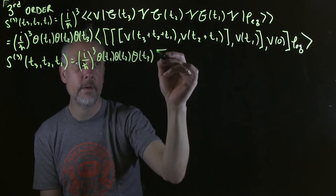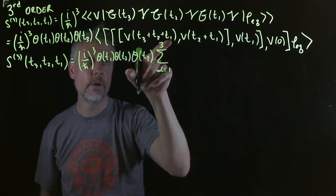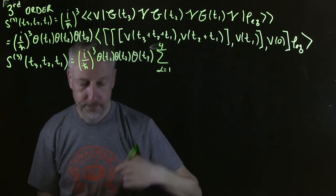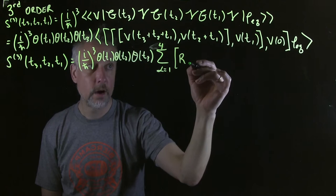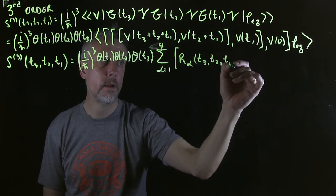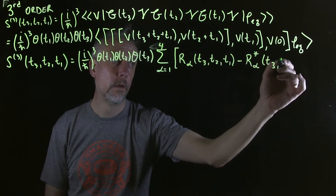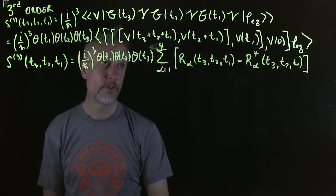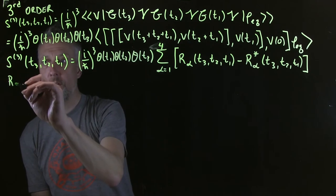All right, and so then, what we have here is a sum, alpha equals one, up to three now, wrong, up to four. All right, and then you just have this r term, r, we'll call it r alpha, t3, t2, t1, minus r alpha star. All right, so then there are, so there's four of these r terms, and if you want to get this one, you just take the complex conjugate of it. All right, so let's write down what those four terms are.